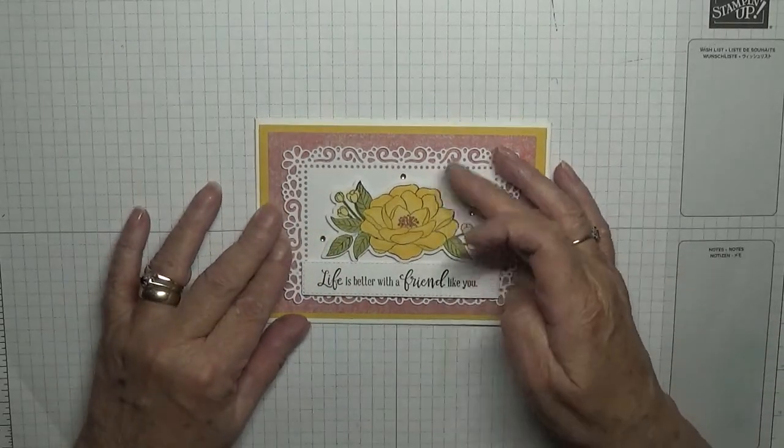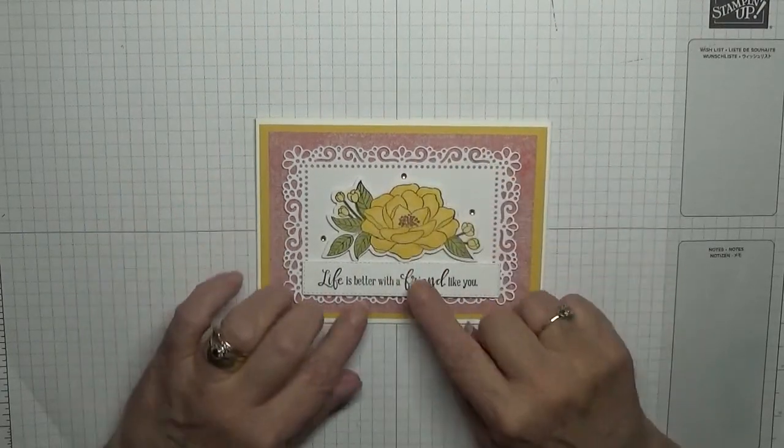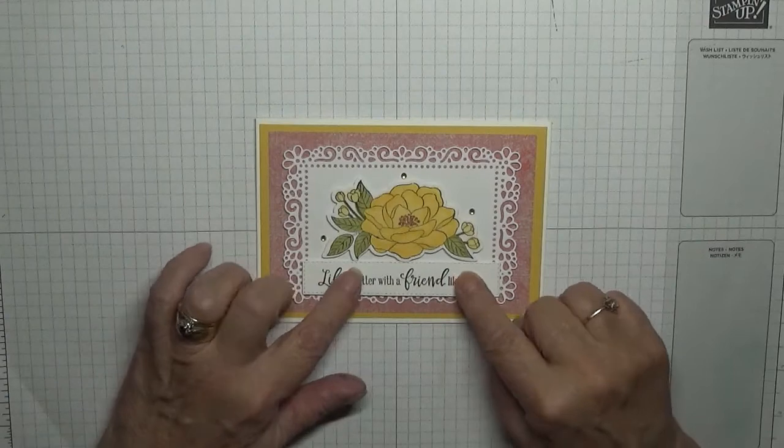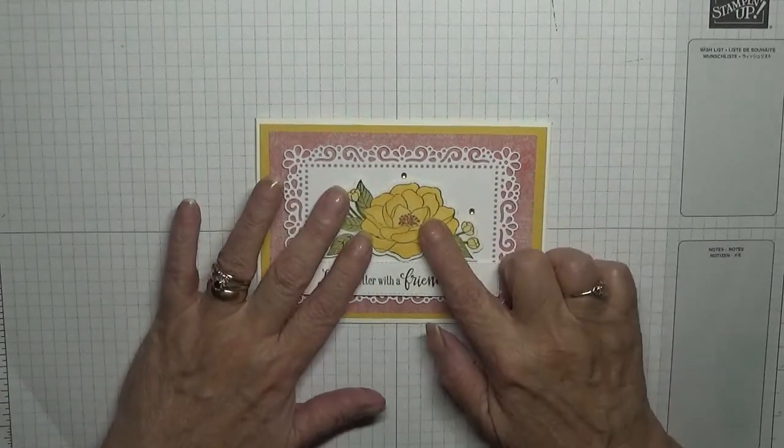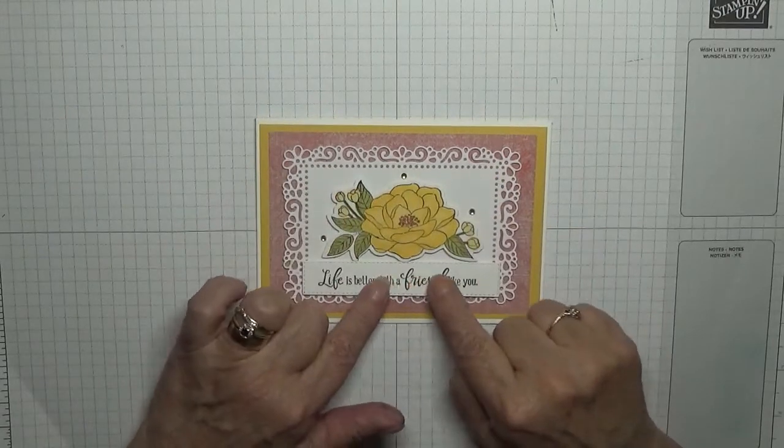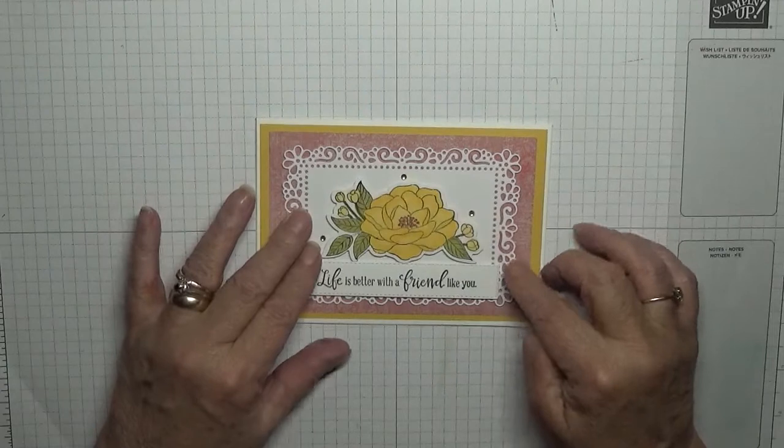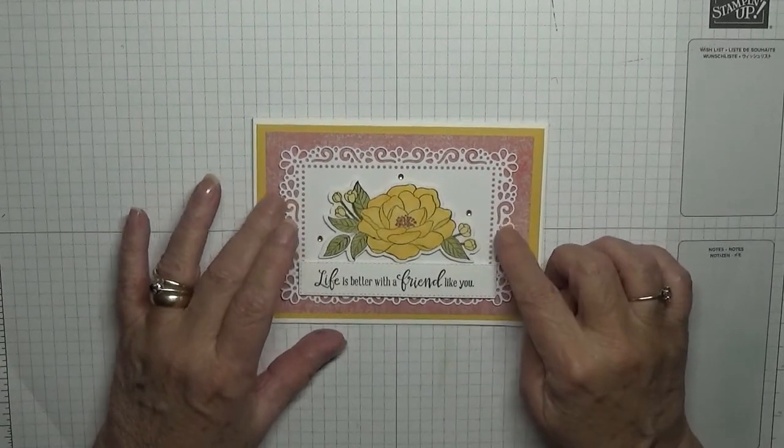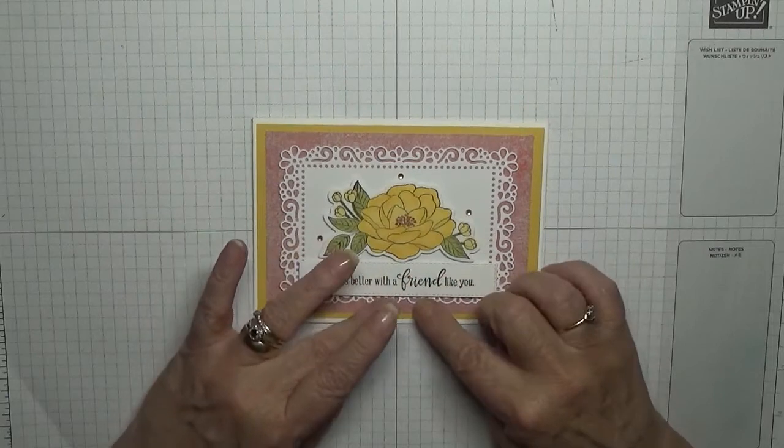With this one I stuck the flower up on dimensionals, which meant I couldn't get this in. So what I'm going to do this time is stamp the flower down flat and then stamp the sentiment at the bottom of this ornate layer rather than have it hide in the bottom. You know what I mean when I tell you.